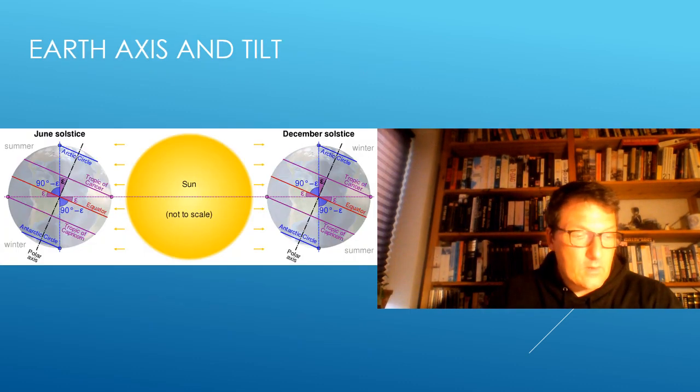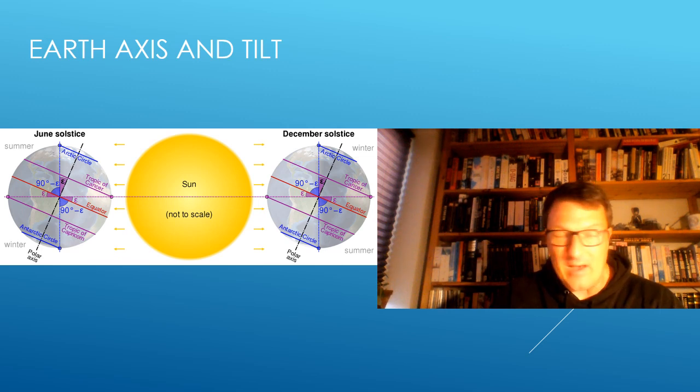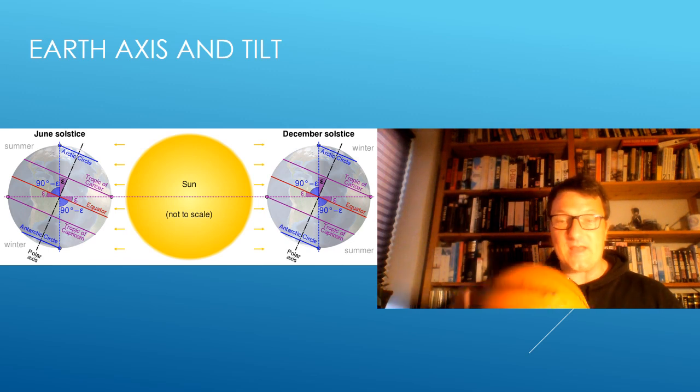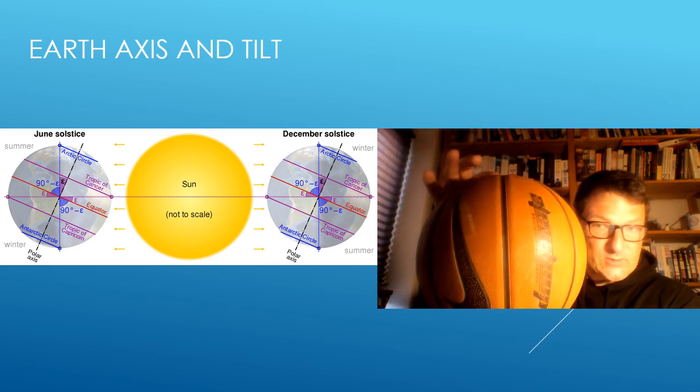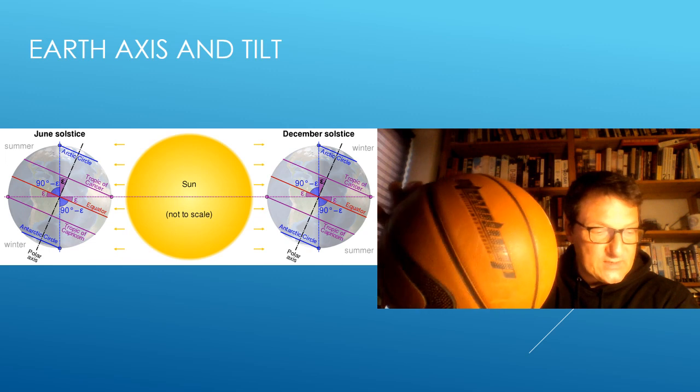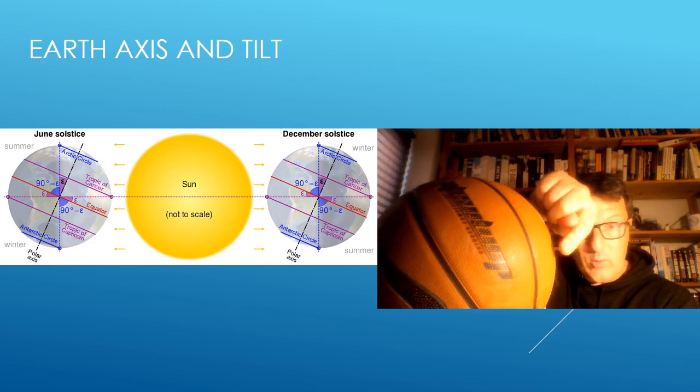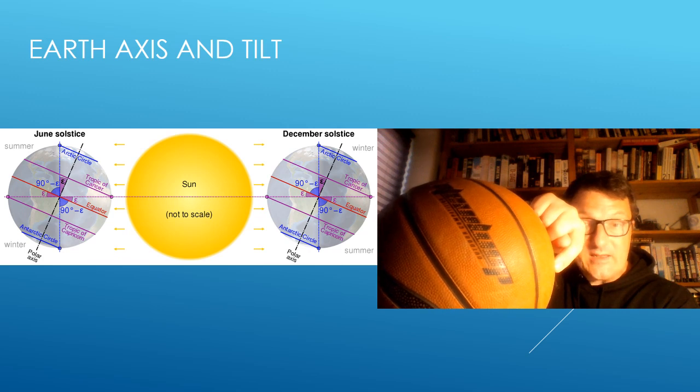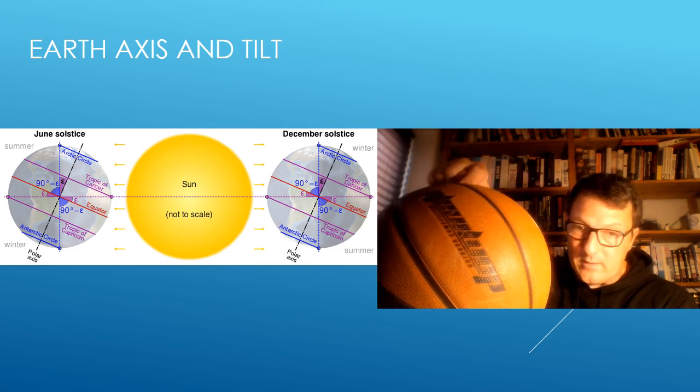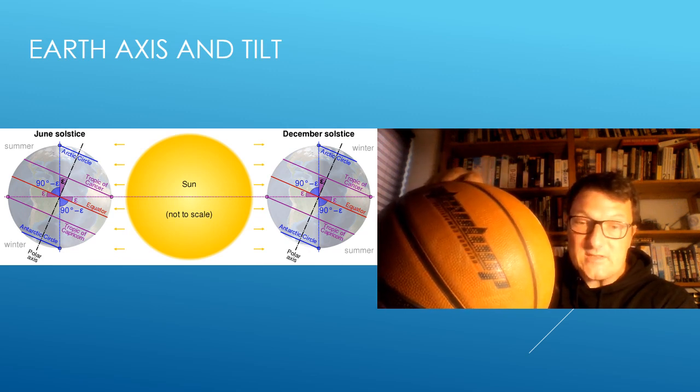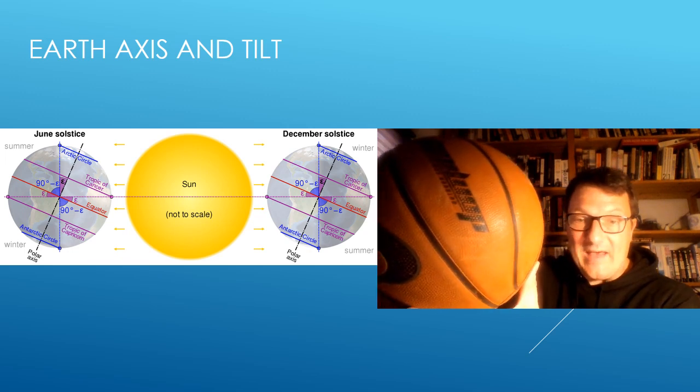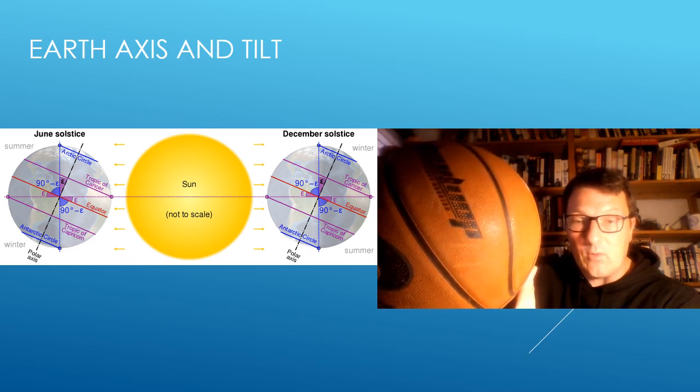The Earth spins on its axis at an angle of about 23.5 degrees. That means the Earth is not straight compared to the Sun, it's slightly tilted. In this case, the southern part of the ball, which we call the southern hemisphere, gets more light than the northern part, the northern hemisphere. This is the condition when we have summer in the south and winter in the north.